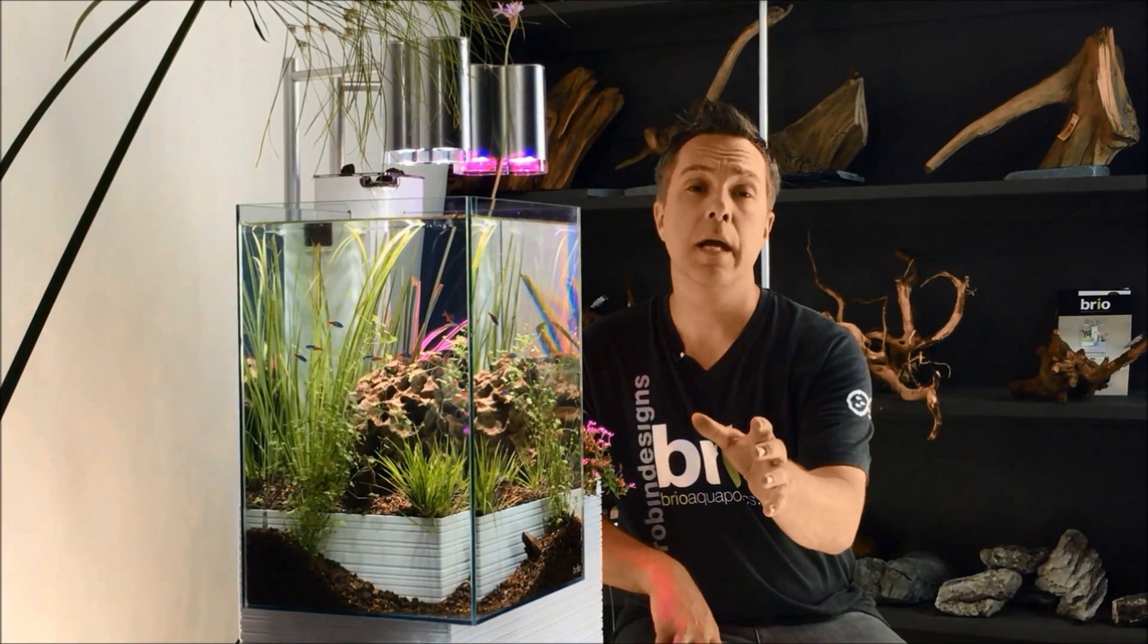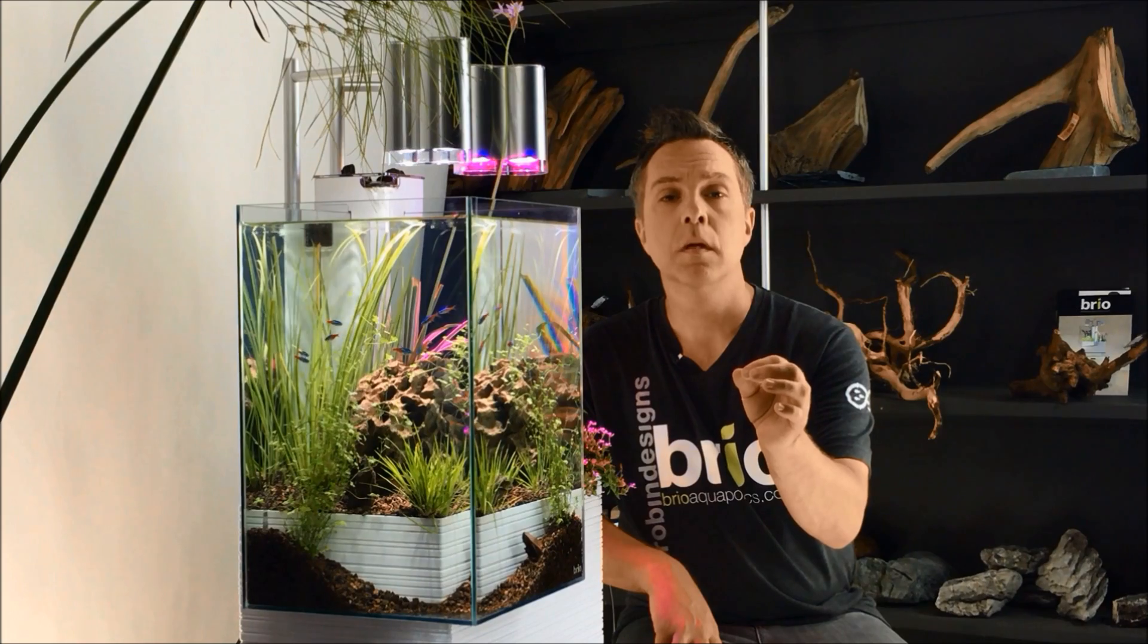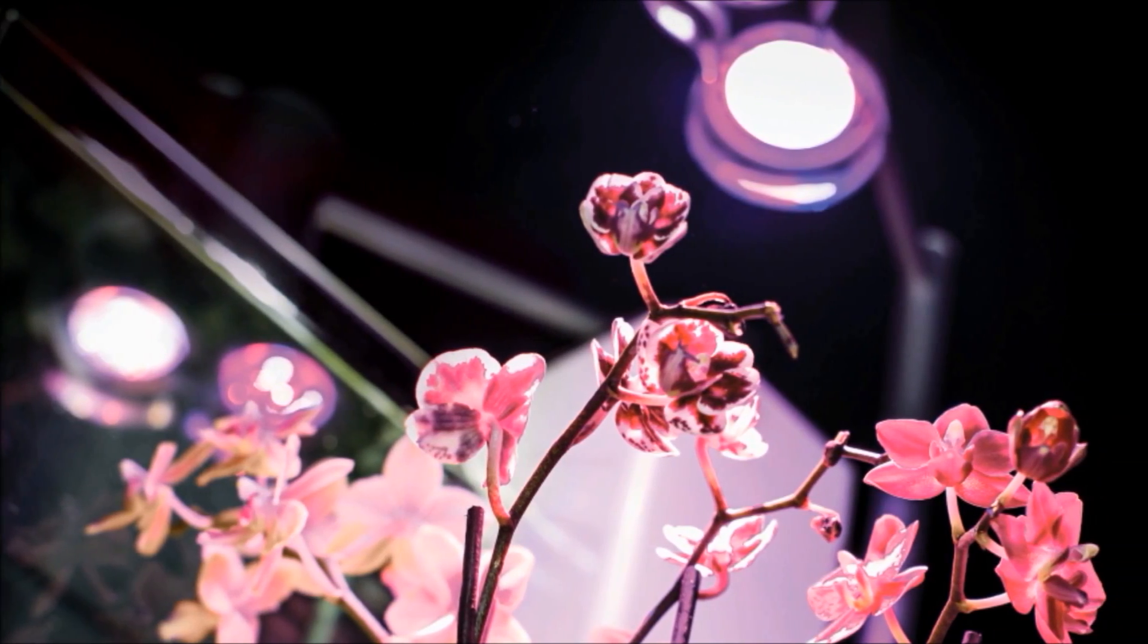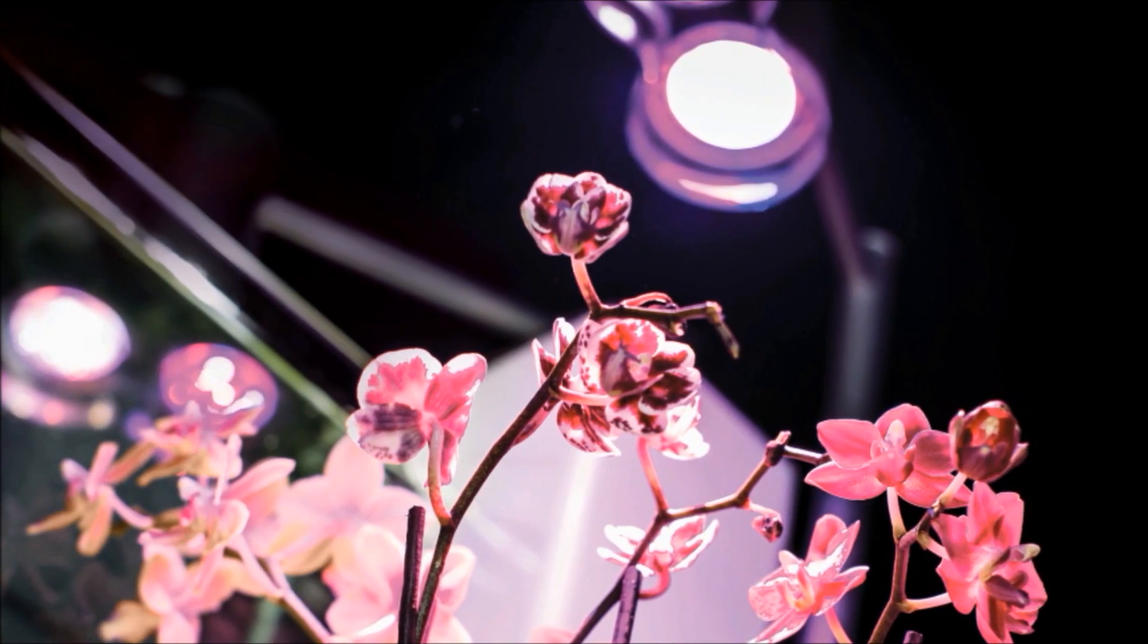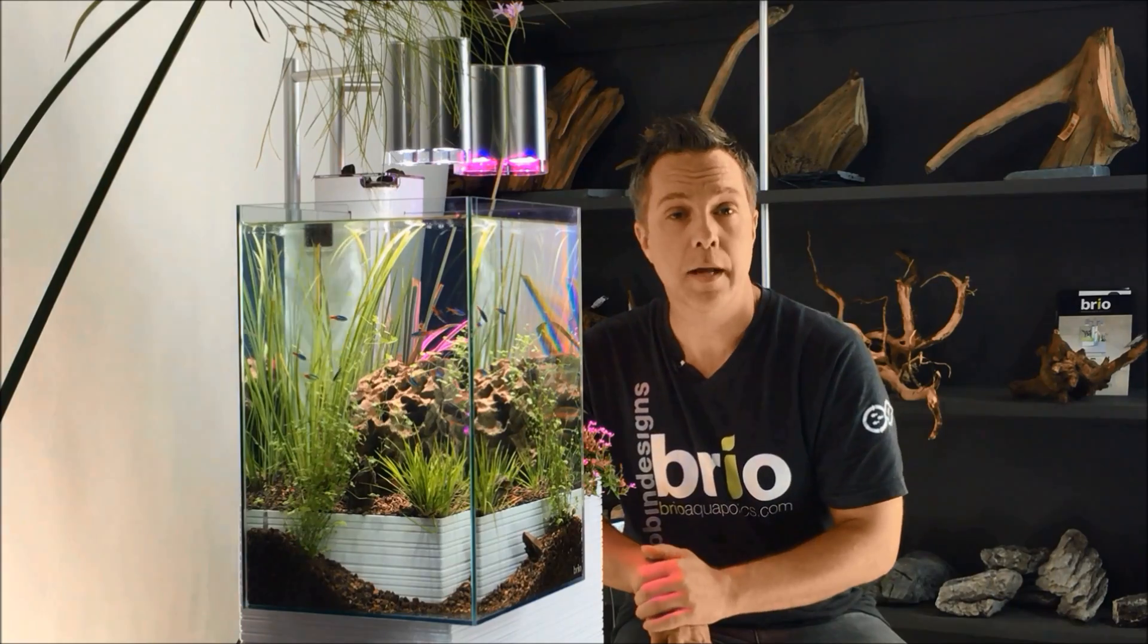Brio incorporates grow lights in the system. Grow lights are special spectrum, red and blue, that plants absorb very efficiently. These are LED bulbs, very eco-friendly in terms of electricity consumption, and they grow the plants very well, efficiently.